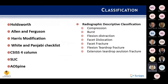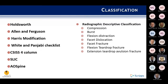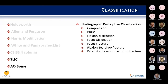C-spine fractures and fracture dislocations are very heterogeneous in pattern and mechanism, making them difficult to classify. There are multiple classification systems. Treatment is typically based on fracture pattern, mechanism, overall alignment, neurologic injury, stability, and a combination of all these factors. Two systems I'd like to discuss are SLIC and the AO-Spine classification.